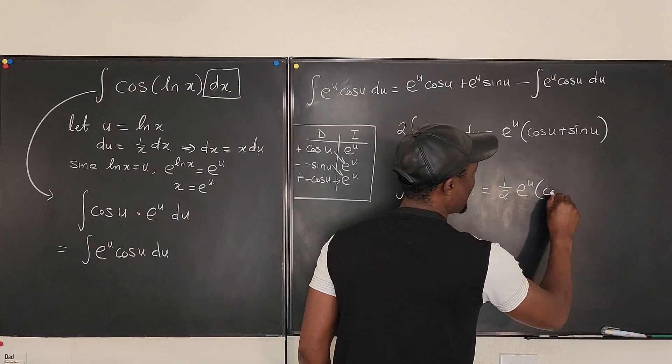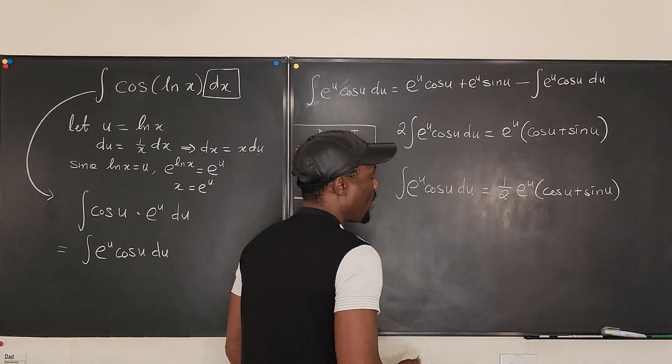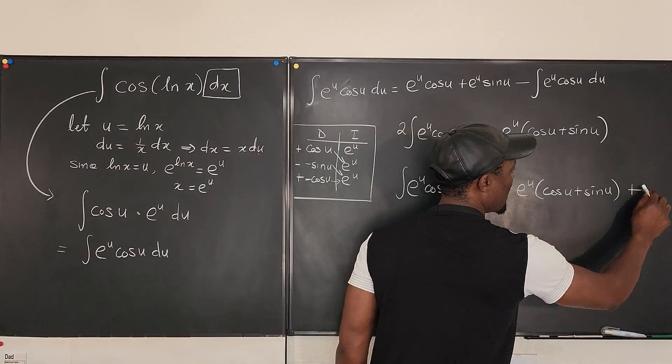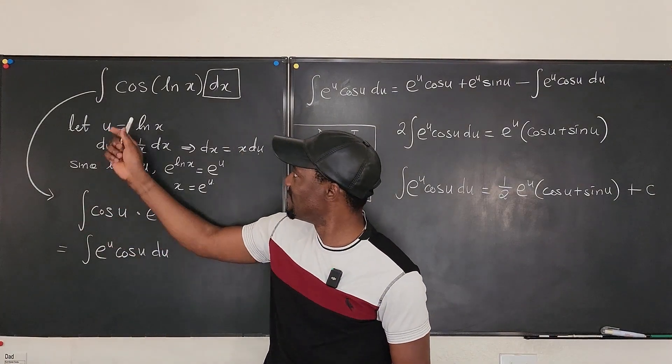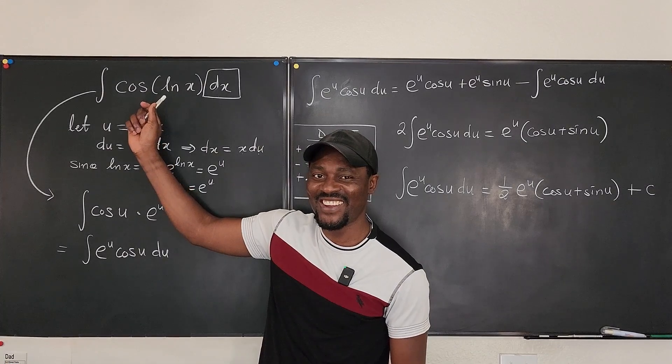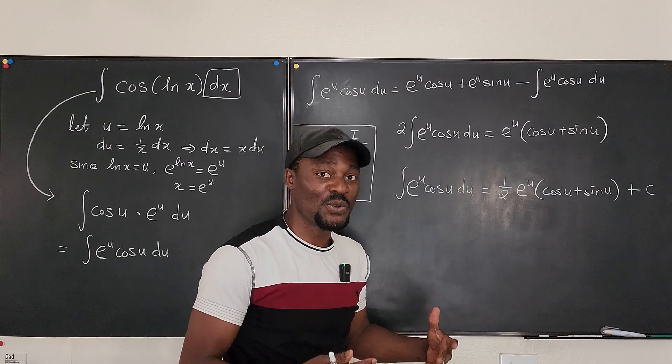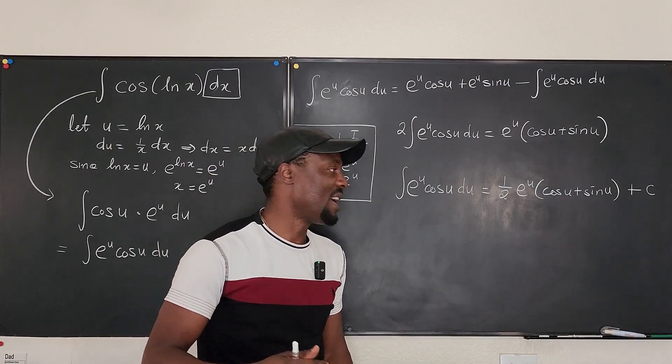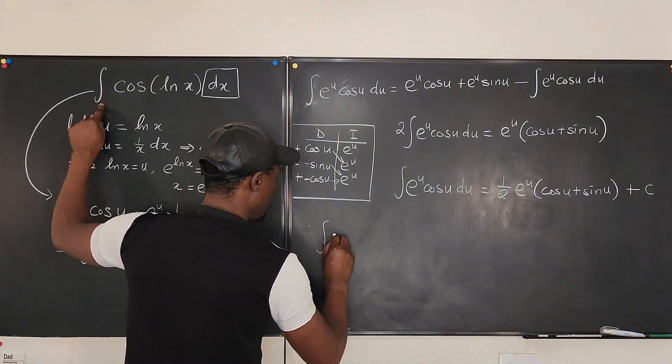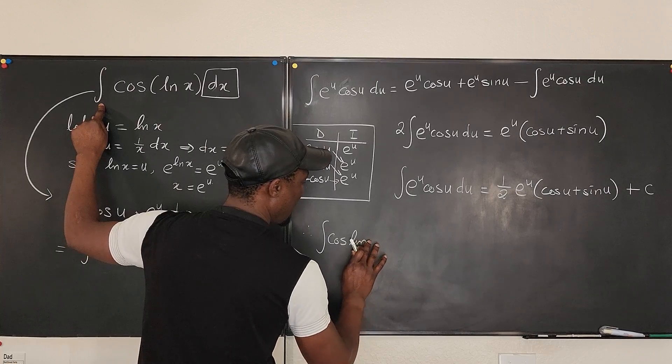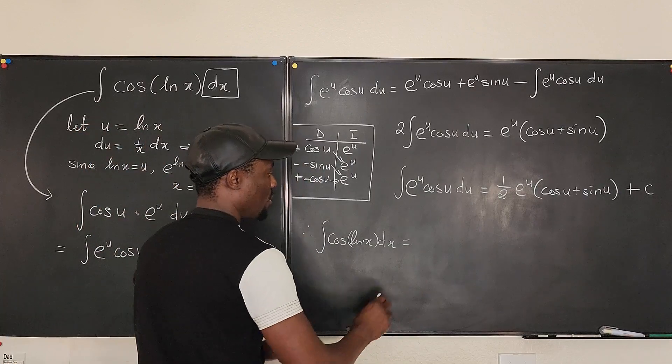Okay, now should I stop here? Usually we would add a constant. The question was not about u—I like how that sounds—it was about x. So we have to go back and replace anything that looks like u and say no, it's got to be in terms of x. So finally we'll say therefore the integral cosine of ln of x dx is equal to one half.